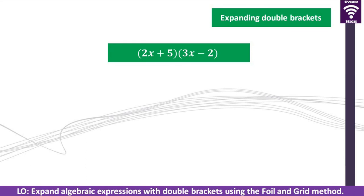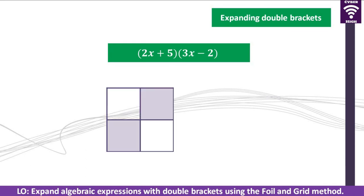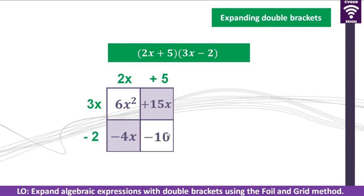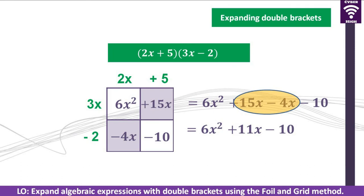I want you to pause this video and expand this next expression. Arrange it on the grid and see what you get. It's time to reveal: the answer is 6x squared plus 15x minus 4x minus 10, which simplifies accordingly. Well done if you got it! If you had some problems, check where your errors were and try it again to see if you get it correct on the second attempt.